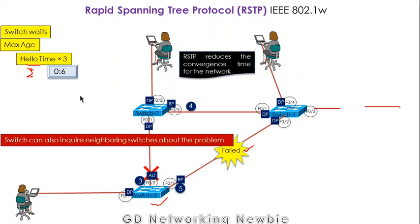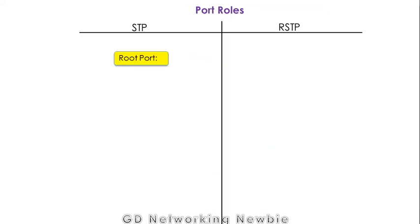In addition, the switches can also inquire neighboring switches about the problem. If there is a problem with any switch, these switches can negotiate or talk with the neighboring switches about the problem as well.